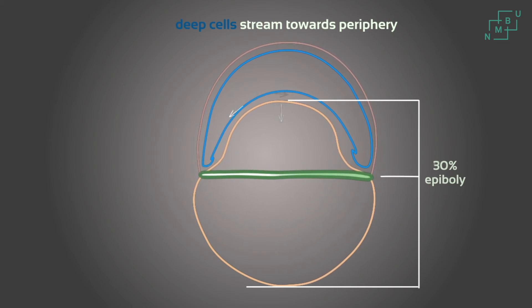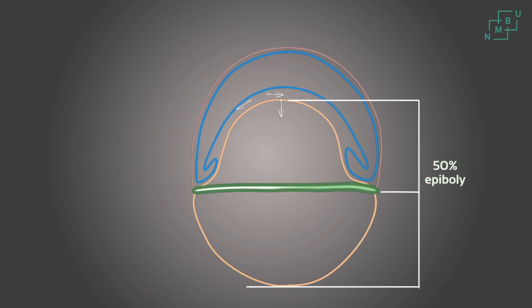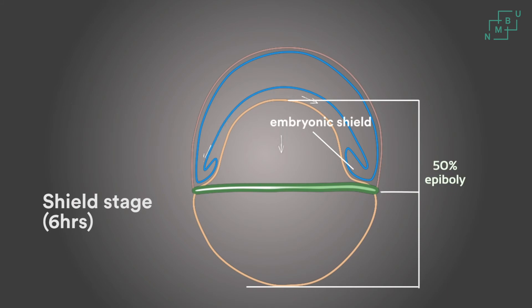The gastrular period commences at about 50% epiboly. In the gastrular period, the cell movement processes of involution, convergence, and extension dominate. At the shield stage, at about 6 hours, as involution continues at the entire margin of the blastoderm, a process of convergence commences. The deep layer cells, in addition to moving towards the blastoderm margin and involuting, also converge towards a single position on the germ ring to accumulate and form the embryonic shield.